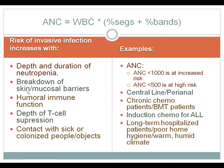Breakdown of skin and mucosal barriers — including the central line and perianal skin breakdown — is a key risk factor. Humoral immune function can also affect neutropenia risk, and this can be seen in chronic chemo patients who are immunosuppressed and thus never really quite clear out old infections, as well as in BMT patients.